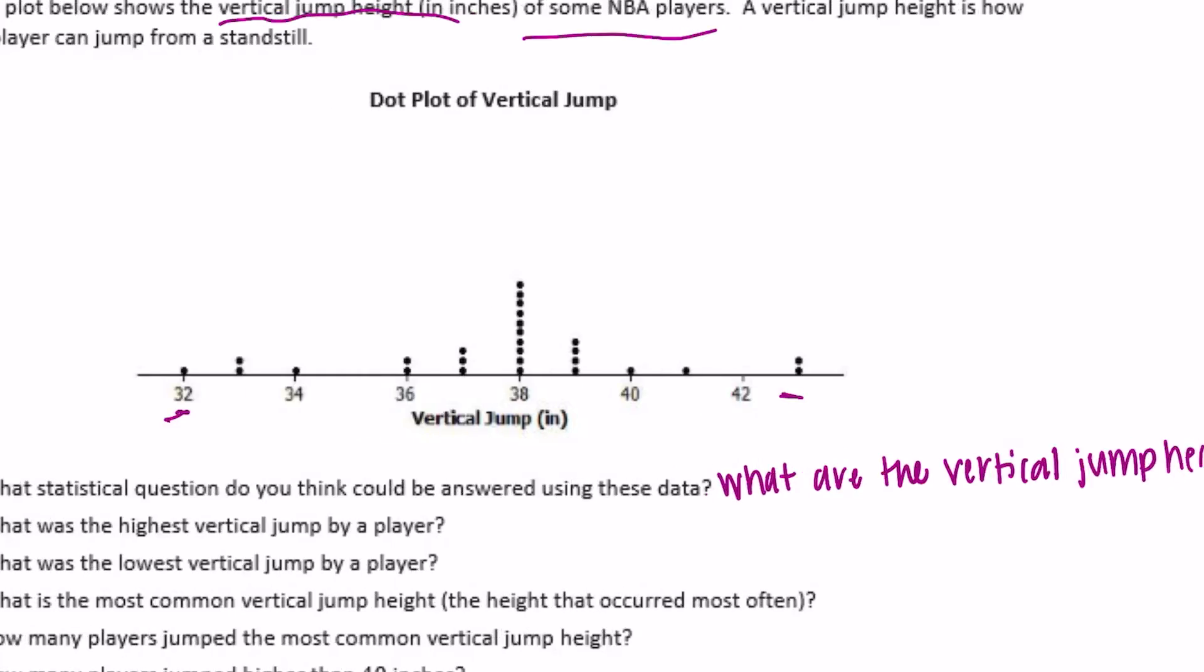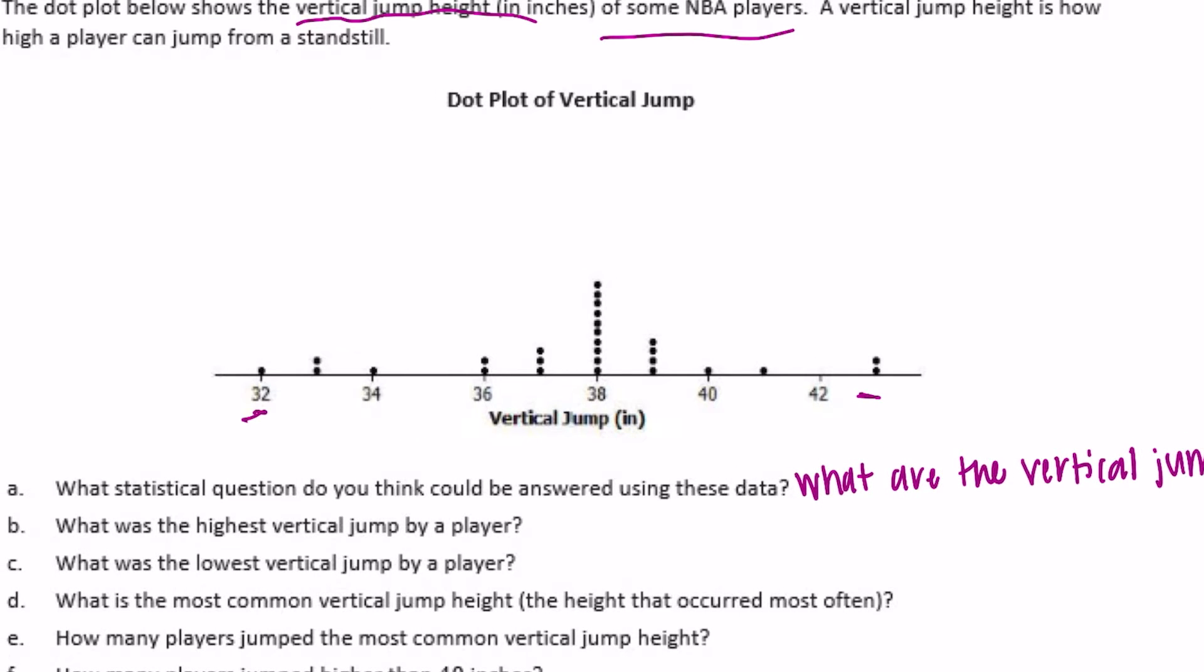And so that's the question we're answering. What was the highest vertical jump by a player? So the highest is right here which would be 43 inches. And then what was the lowest vertical jump? That's down here, 32 inches. What was the most common vertical jump height, the height that occurred the most often? The one with the most dots is right here at 38 inches.